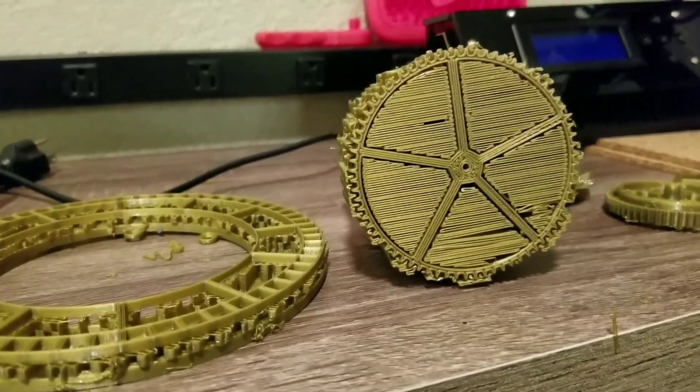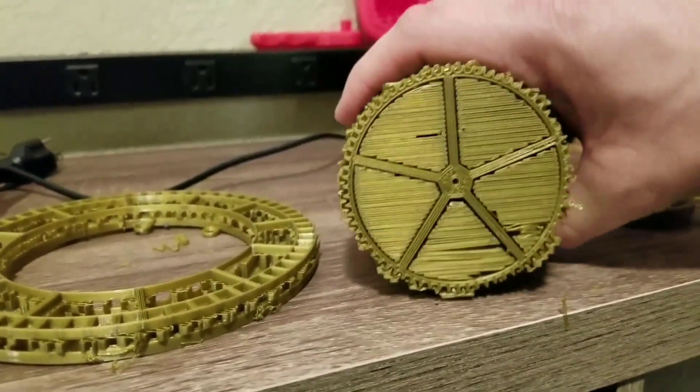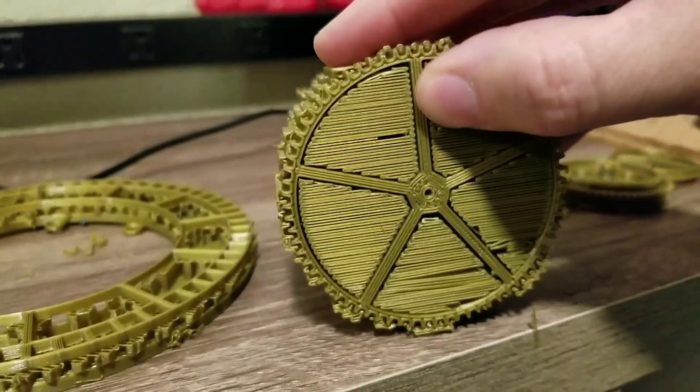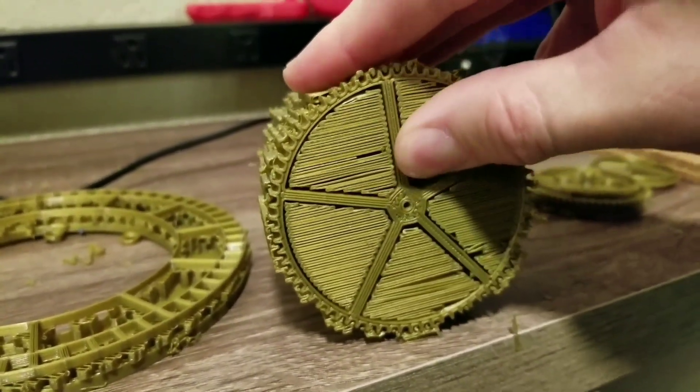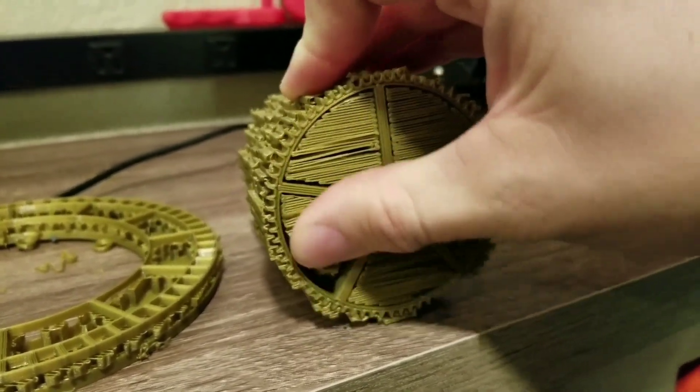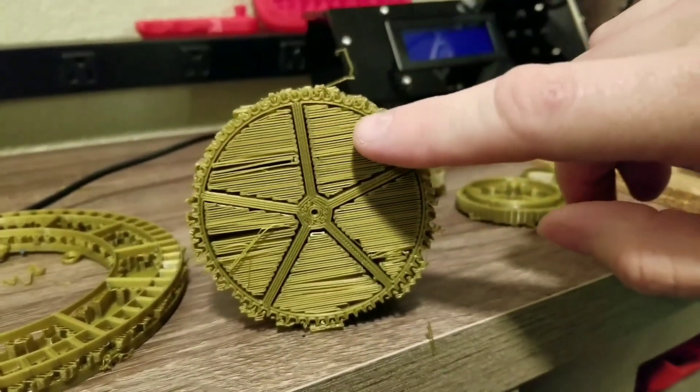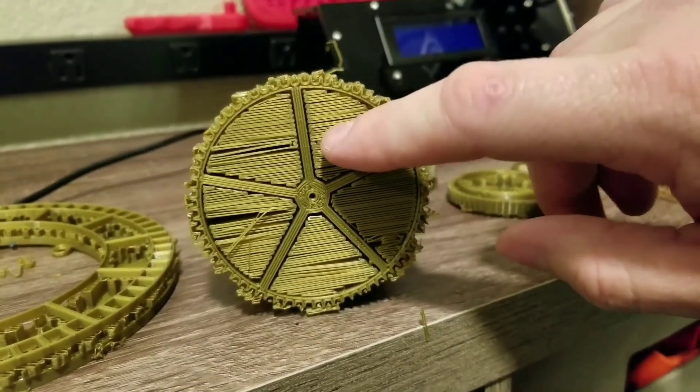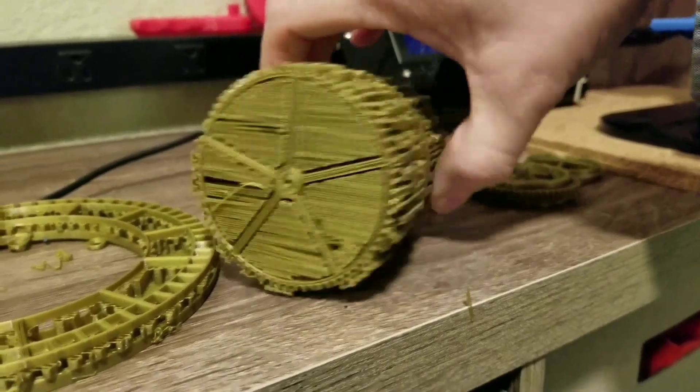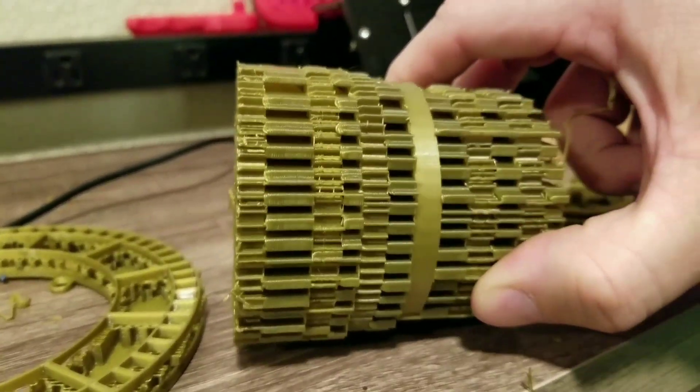Before I actually take this apart, I just want to show you how good the Simplify 3D support material is. That is all detached from the inside of the part - I could probably just pull that straight out. If I had planned my supports better I would have left holes here in the support material so I could just pull it all out with a pair of pliers. It's coming apart pretty good.